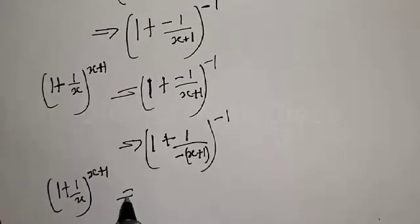From the question we have 1 plus 1 over x, raised to the power x plus 1, to be equal to 1 plus 1 over 4, raised to the power 4. Comparing both sides, this 4 on the right corresponds to the base term, and this 4 as the exponent corresponds to the exponent. So we have minus x plus 1 equal to 4.